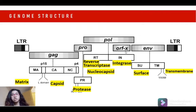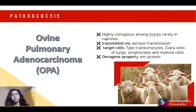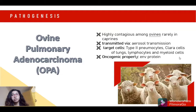Jaagsiekte sheep retrovirus is known to cause a highly contagious disease among ovines called ovine pulmonary adenocarcinoma. This is transmitted via aerosol and primarily targets type 2 pneumocytes and Clara cells. It also attacks lymphocytes and myeloid cells, causing neoplastic growth through its envelope protein's oncogenic property, wherein activation of the ENV protein promotes signaling cascades for proliferation and malignant transformation of cancer cells.